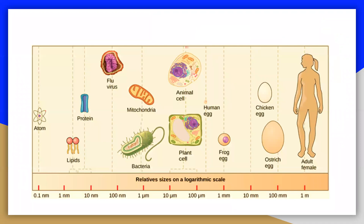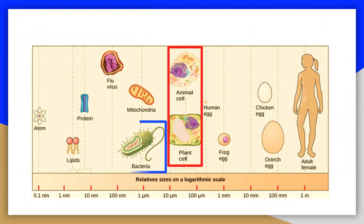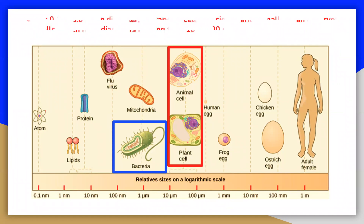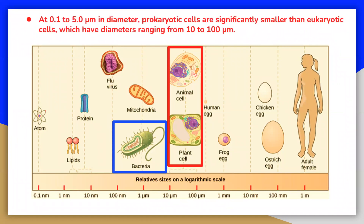A prokaryote is a simple unicellular organism that lacks an organized nucleus or any other membrane-bound organelles. In general, prokaryotic cells range in size from 0.1 to 5 micrometers, and eukaryotic cells have diameters ranging from 10 to 100 micrometers.